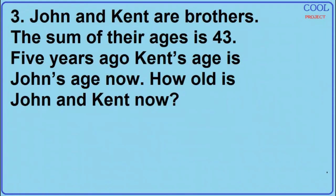Number 3: John and Kent are brothers. The sum of their ages is 43. Five years ago, Kent's age was John's age now. How old is John and Kent now?